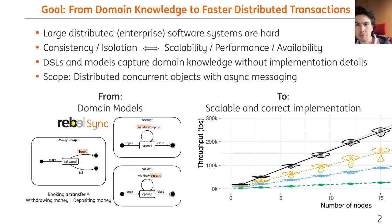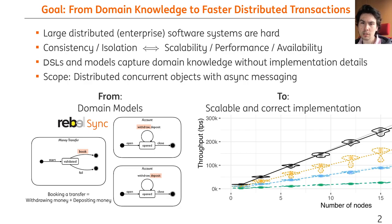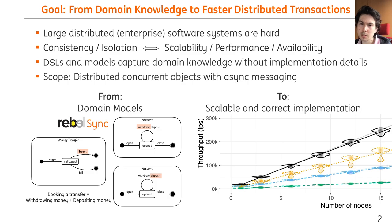In particular, I focus on a domain-specific language for financial products named Rebel, which models communicating state machines. In this example, in the lower-left corner, we see three synchronizing state machines. A money transfer books and coordinates with the two accounts involved, and there is an invariant that balance has to remain positive. The challenge here is to make a scalable implementation that performs well for many different similar models.